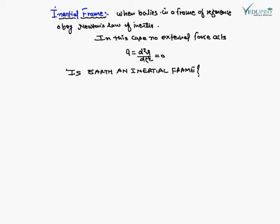Strictly speaking, Earth is not an inertial frame of reference. Because the Earth is rotating not only about its own axis, but also rotating about the Sun.